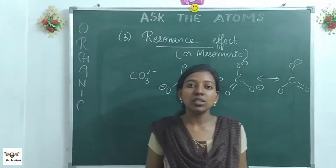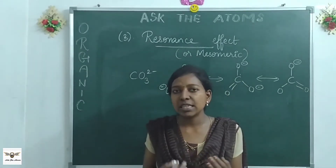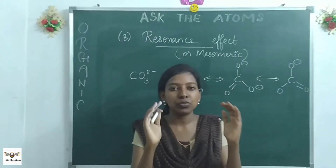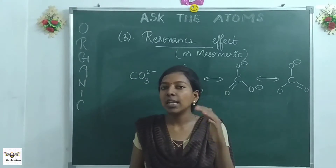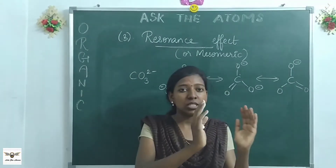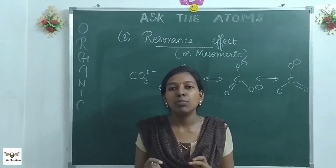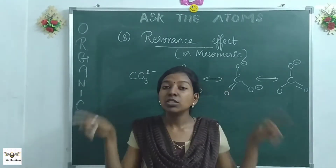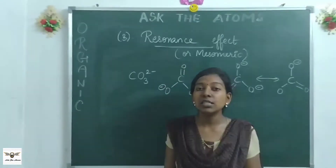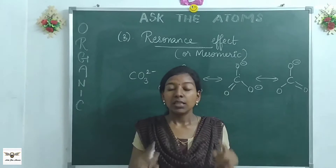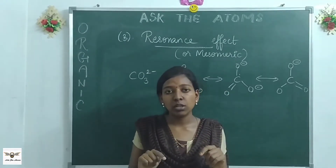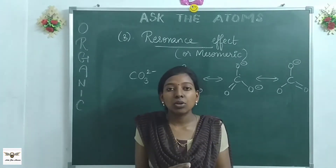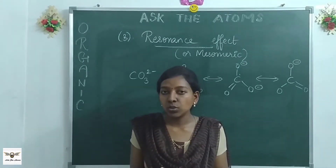So when you see the electromeric effect, there is an attack of the substrate — which is usually a multiple-bonded system — by an electrophile or nucleophile. You call it plus E or minus E. Understanding this will help you learn organic chemistry better. Now, the third effect: resonance, also called the mesomeric effect. The concept is not well understood by many students. When you think of benzene, it has a beautiful hexagonal structure with alternating single and double bonds — three pi bonds — and the pi bonds can be interchanged.